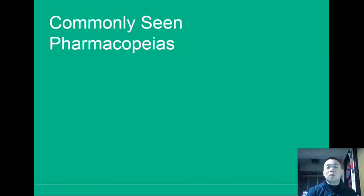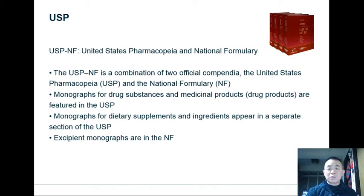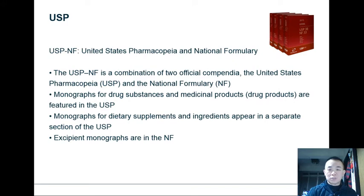Now let's talk about some commonly seen pharmacopoeias — I'll talk mainly about two of them. The first one is USP, which stands for the United States Pharmacopoeia, and it actually comes in two parts: one is the USP and the other is the NF or the National Formulary. The pharmacopoeia is a combination of two official compendia. Drug substances and medicinal products are featured in the USP, whereas dietary supplements, ingredients, and excipients are featured in the NF.